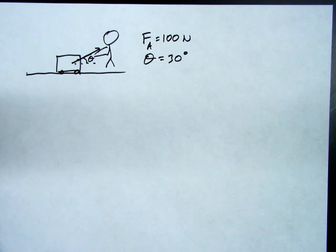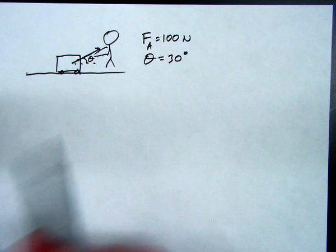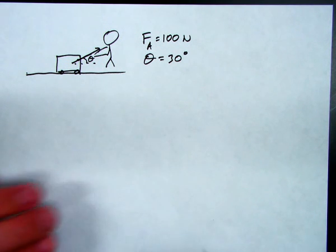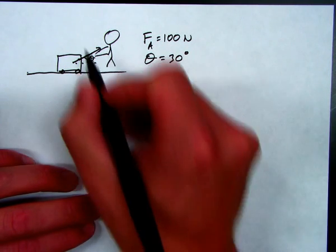So not all 100 Newtons will cause the block to move forward. Only some part of that is going to impact the horizontal motion of the block, and some part of that is going to act vertically. So, the key here is to break this applied force into two parts.